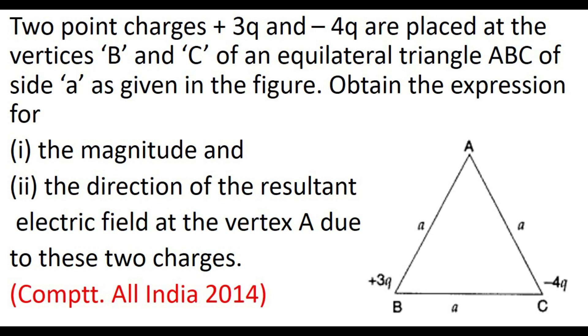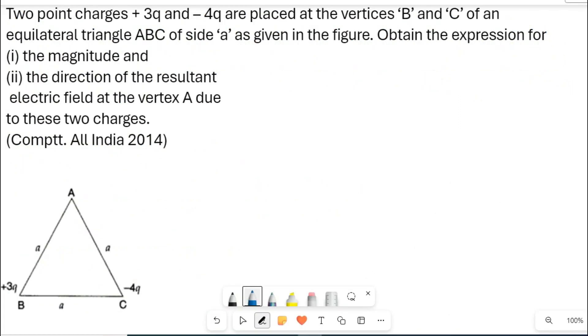The next question is: two point charges plus 3Q and minus 4Q are placed at the vertices B and C of an equilateral triangle ABC of side A as shown in the figure. Obtain the expression for first, the magnitude, and second, the direction of the resultant electric field at the vertex A due to these two charges. This is from All India 2014. We are going to answer this question.